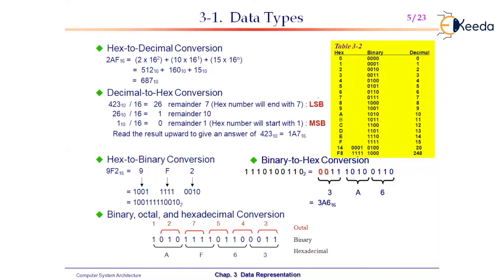Arranging 423 ÷ 16: answer 26 remainder 7; 26 ÷ 16 = 1 remainder 10 (A); 1 ÷ 16 = 0 remainder 1. Arranging 1, A, 7 in inverse order gives 1A7 — the hexadecimal equivalent of 423.